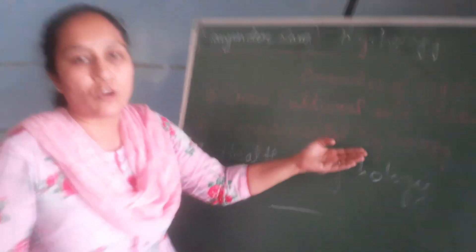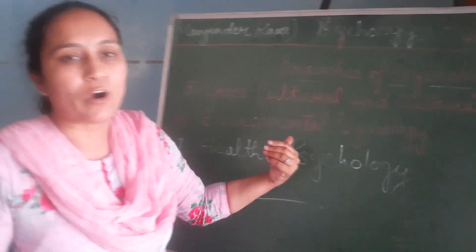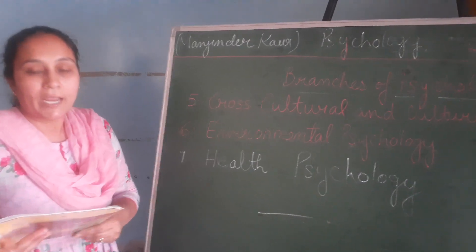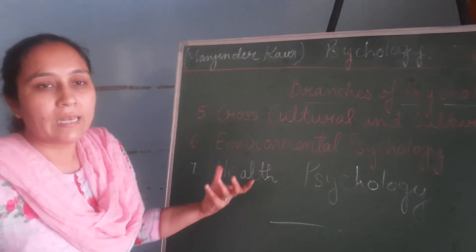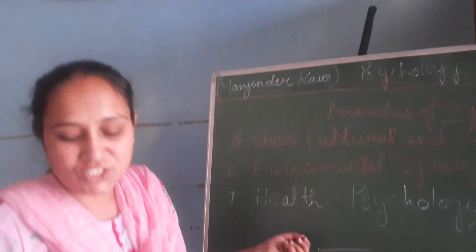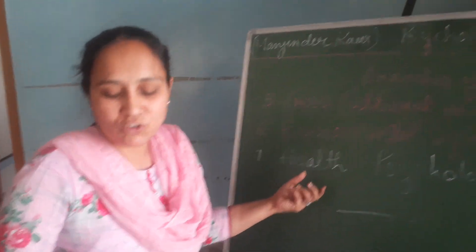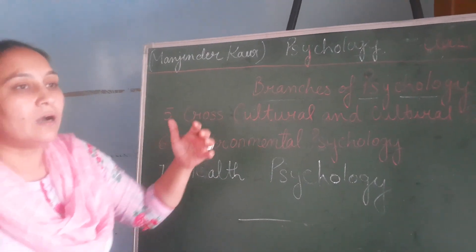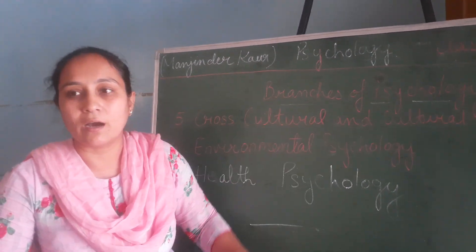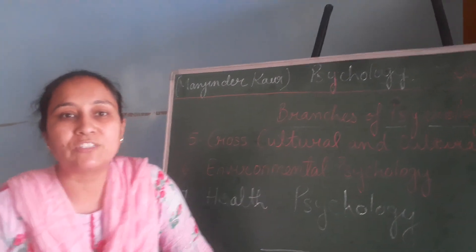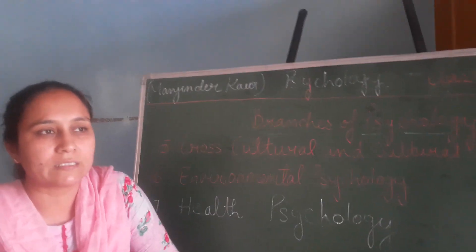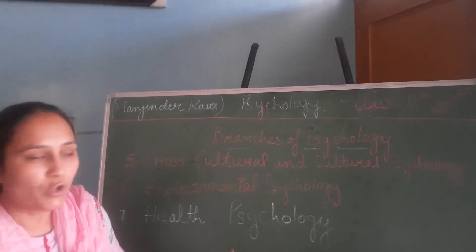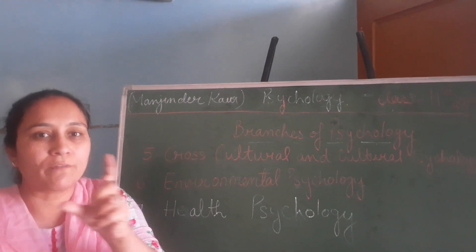The sixth branch is environmental psychology. Environment here refers to physical factors like humidity, temperature, pollution, natural disasters, and how they affect human behavior. For example, if we talk about metropolitan cities like Delhi or Chandigarh, the humidity there in the months of June and July is studied in environmental psychology.